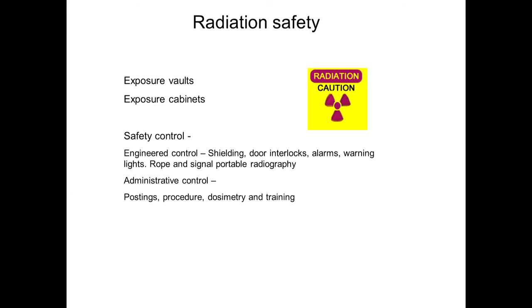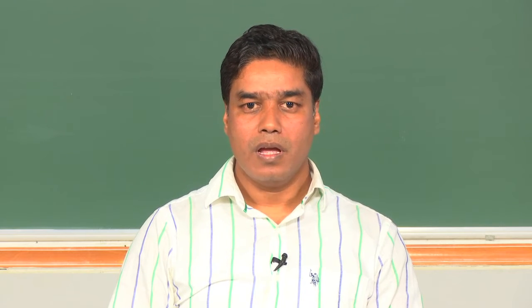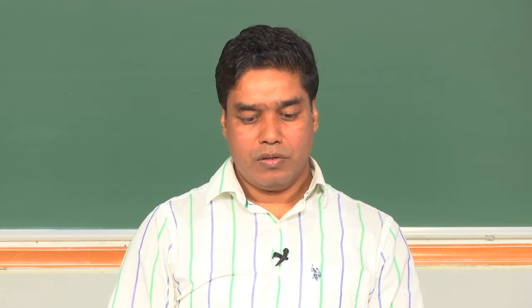This is one thing that one should always keep in mind while working with radiations, as in the case of radiographic testing. With regard to radiation safety, there are two things: one is called engineering safety controls and the other is called administrative control. These are to ensure that the personnel and examiners working with radiation for radiographic testing, as well as people around the radiation zone, are not exposed to harmful radiations.